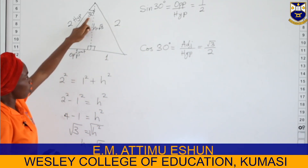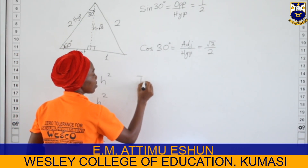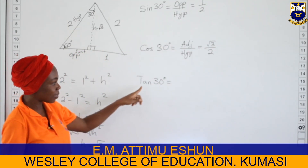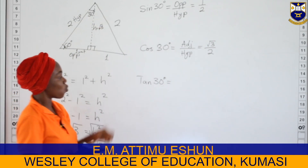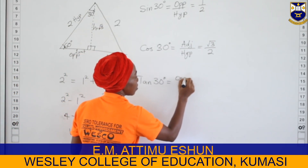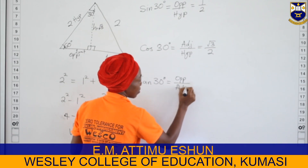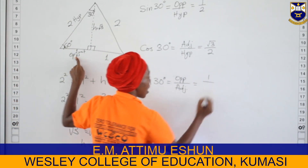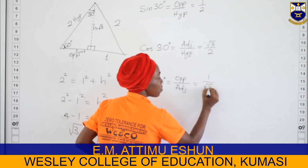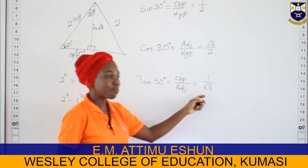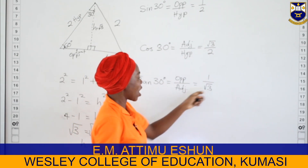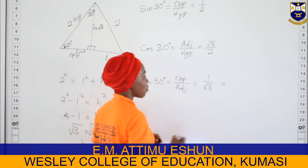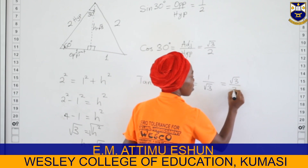Finally, for tan 30 degrees: the ratio is opposite divided by adjacent. From our diagram, the opposite side is one unit and the adjacent side is root three. One divided by root three is irrational, so we rationalize it, giving us root three over three.